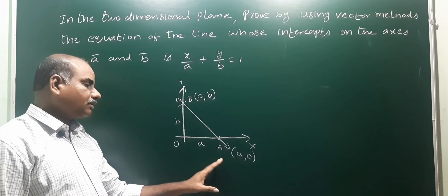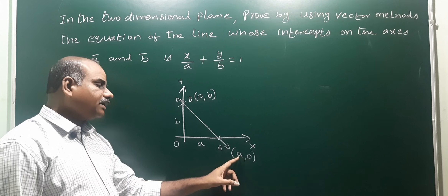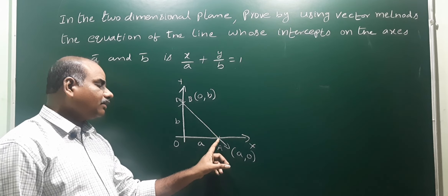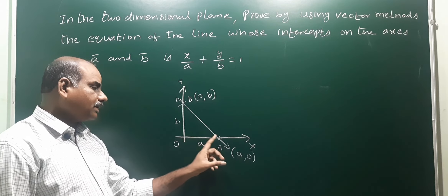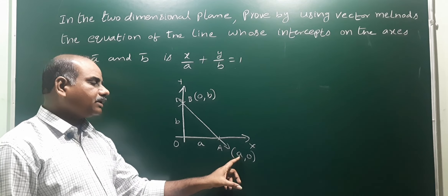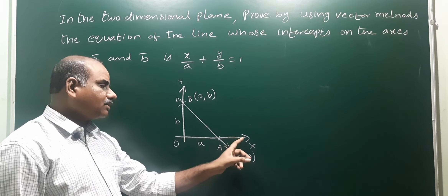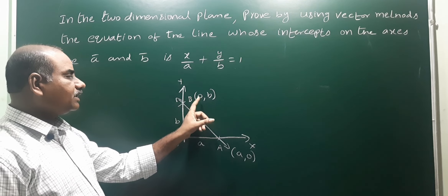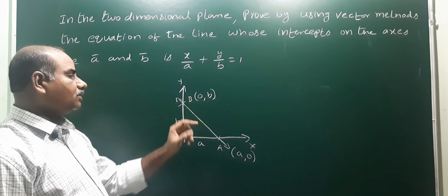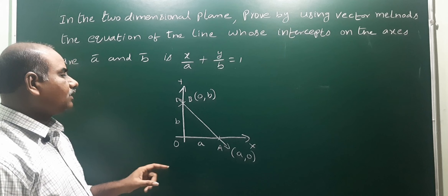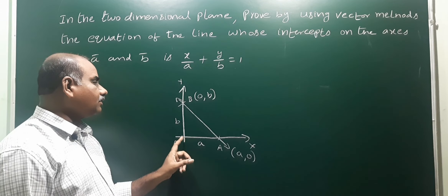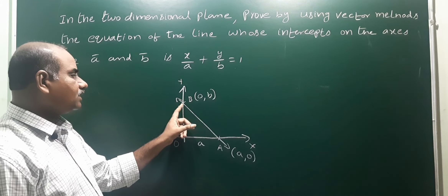Point A has x-coordinate a and y-coordinate 0 because it lies on the x-axis. Point B has x-coordinate 0 because it lies on the y-axis, and y-coordinate b, which is the y-intercept.